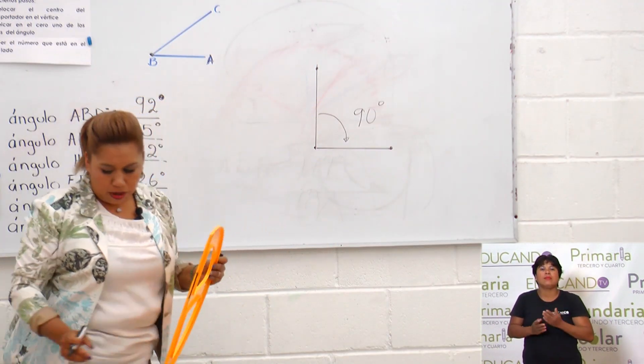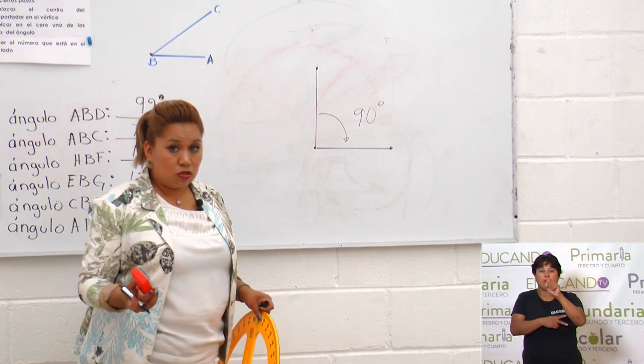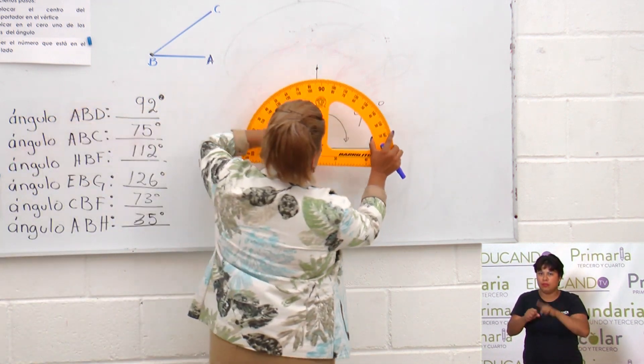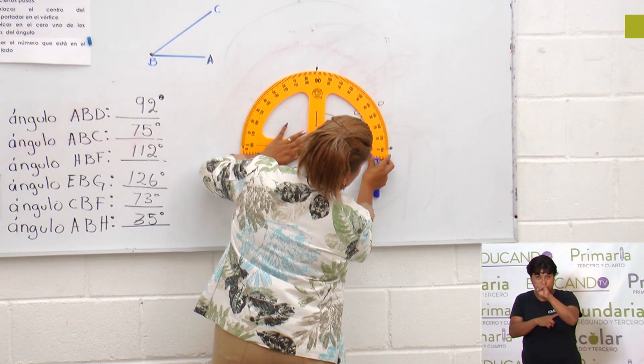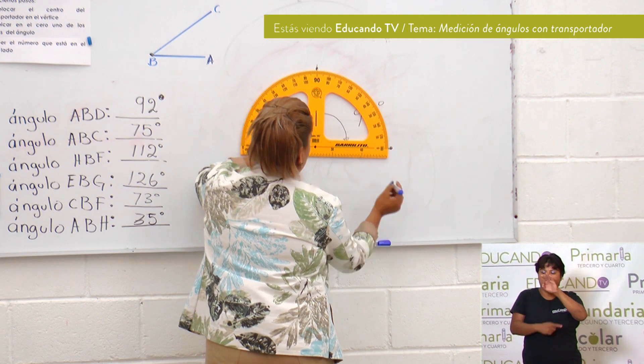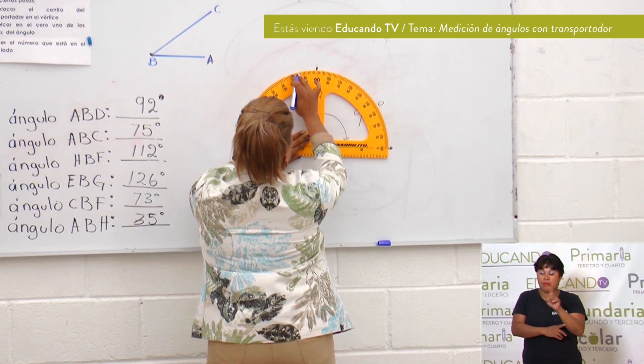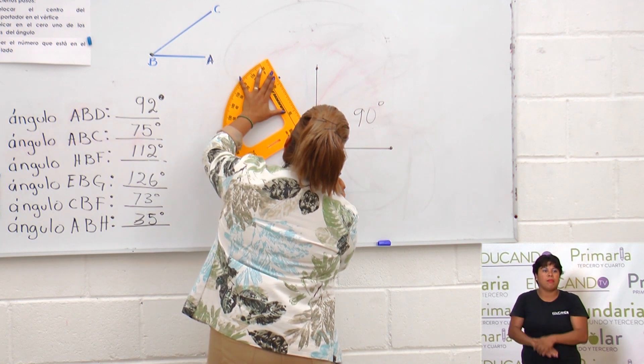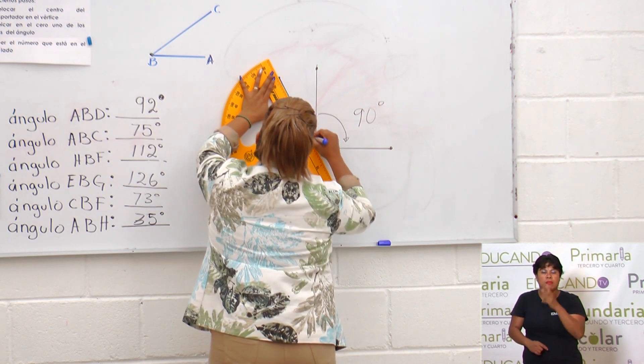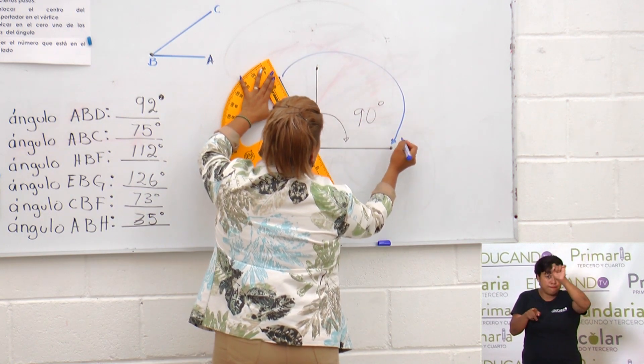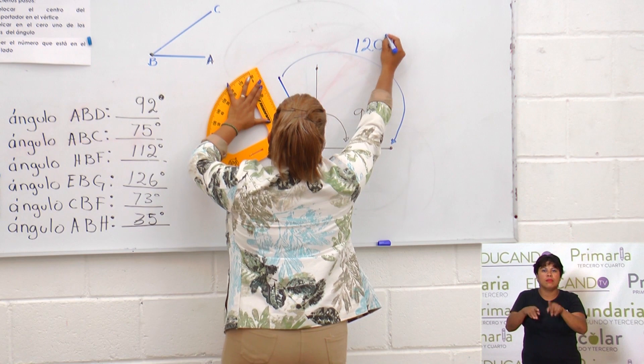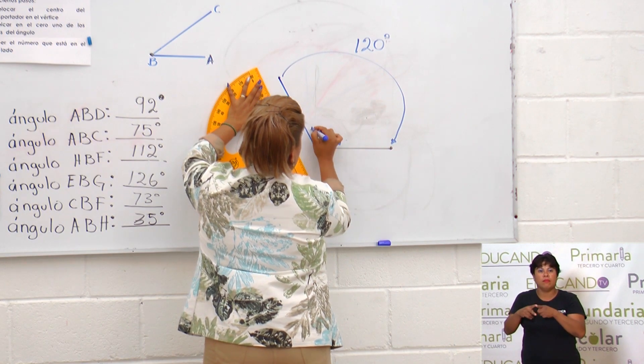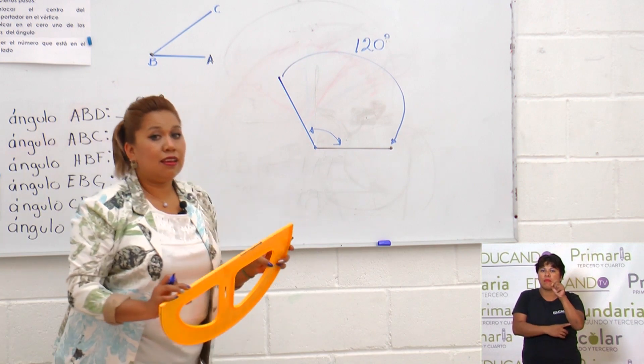Muy bien. Ahora vamos a realizar un ángulo de 120 grados, ¿pero te parece si lo hacemos ahí mismo? Muy bien. Solo voy a utilizar otro color. Parto del punto cero y ahora voy a marcar 120 grados: 90, 100, 110 y 120. Aquí pongo el puntito y ahora trazo. Para que veas que de aquí hasta acá mide 120 grados. Ahora sí voy a borrar el de 90. Y este ángulo que se está formando en esta parte de aquí mide 120 grados.